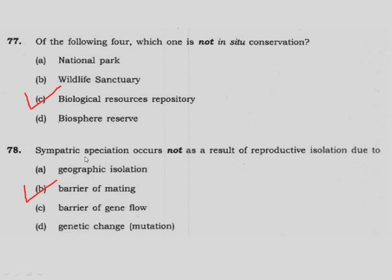Question 78: Sympatric speciation occurs not as a result of reproductive isolation due to what? In sympatric speciation, organisms are in one area but are not mating, resulting in speciation. This is due to a mating barrier between two species. Correct answer is option B.